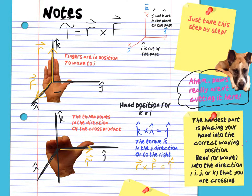Okay, let's do this one. We're going to do K cross I. So first thing, put your fingers in the K position — point your fingers in the direction of K, positive K, so you point them up. You twist your wrist so that when you bend your fingers, they are parallel to the I direction, or you can think about waving to the I direction. Just as the picture suggests here, and then whatever direction your thumb is in, that's the direction of your answer. So here your thumb is pointing this way, which is in the positive J direction.